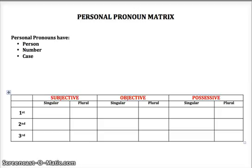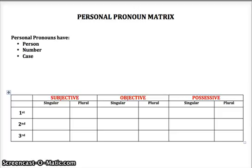First person point of view uses pronouns like I, me, we, us, etc. And third person point of view uses pronouns like he, she, they, them, him, her, etc. Very, very rarely is literature written in second person, and quite frankly it is never written in second person when you are a high school student. So when you're writing, you will always use either first or third person pronouns.